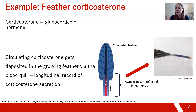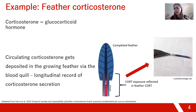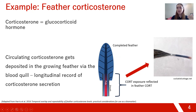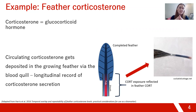To give an example of how this works, we can look at feather corticosterone — a glucocorticoid hormone involved in energy balance as well as the stress response. Corticosterone circulates in the blood, and feathers as they grow have a blood supply. You can see the dark red portion leading up to the feather — that's what we call the blood quill — and it feeds the growing feather. These hormones circulate through the blood quill and inevitably get deposited in the growing feather as it grows.